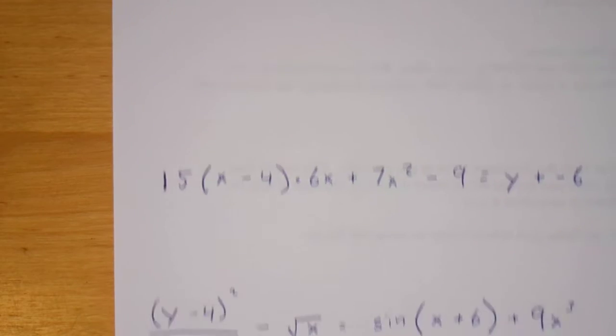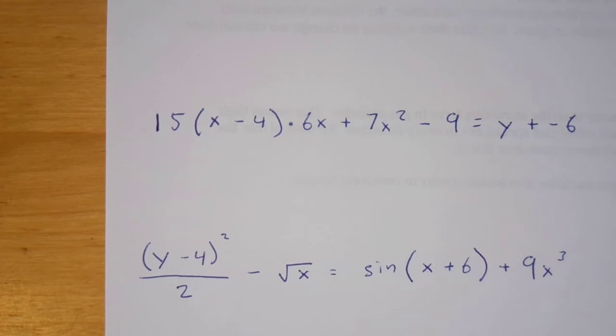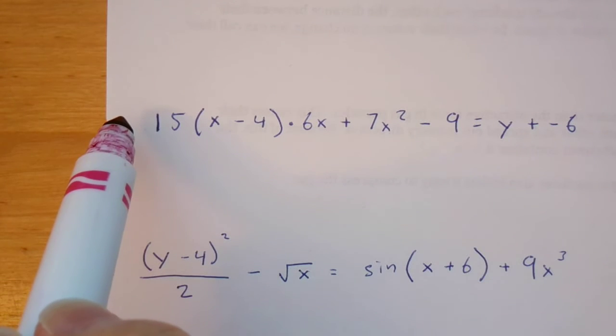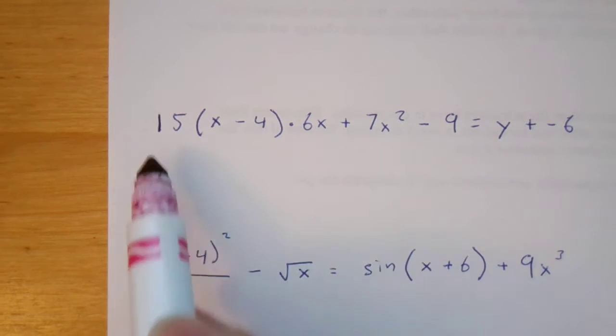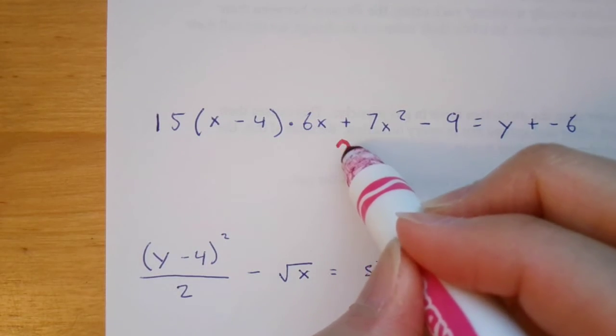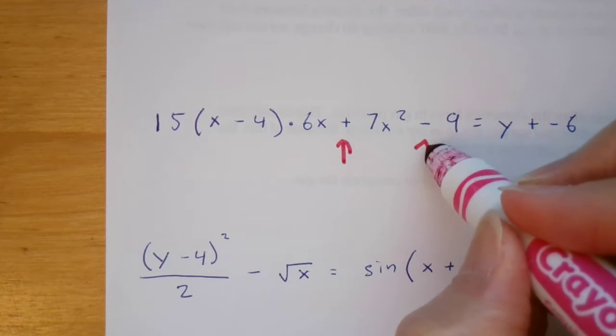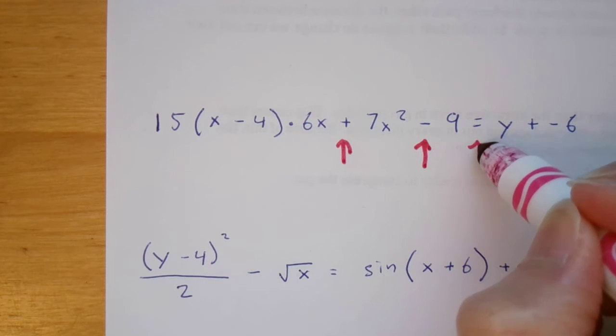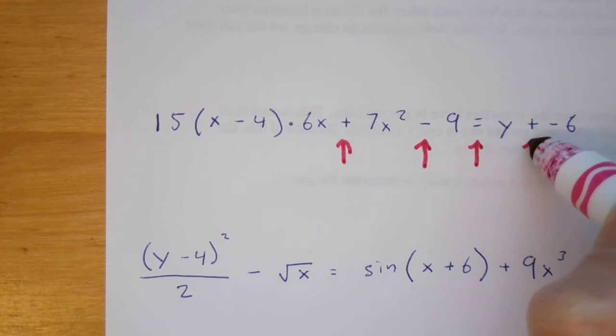Let's give an example. So step one, I'm starting on the left. I'm going to stop anytime I see a plus sign, a minus sign, or an equal sign that is not inside of parentheses.